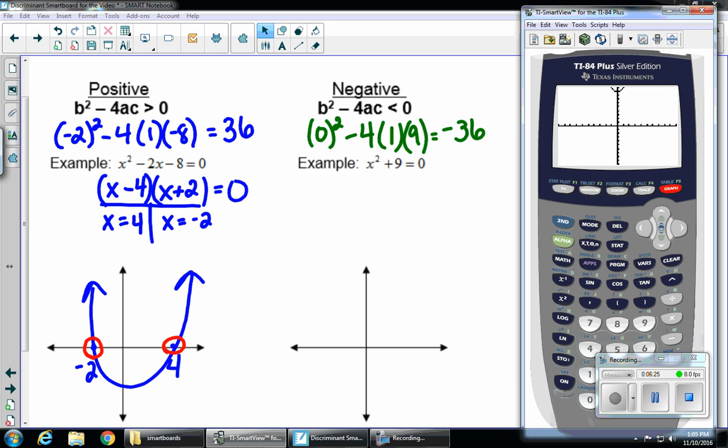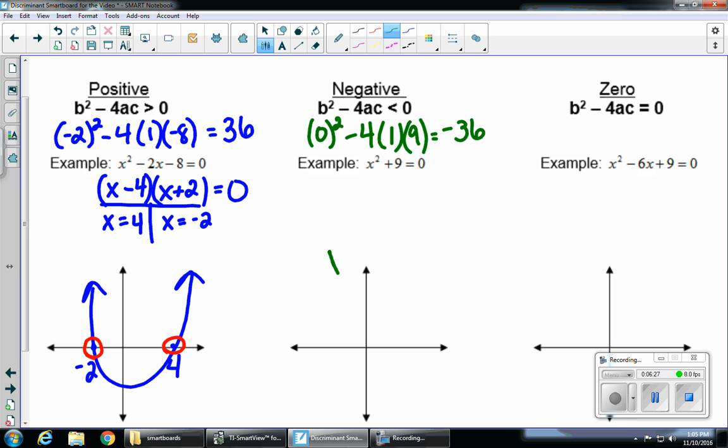It does not cross the x-axis. It has no x-intercepts. There are no x-intercepts because we had two imaginary roots. So if I have an imaginary root, it's not going to touch the x-axis.